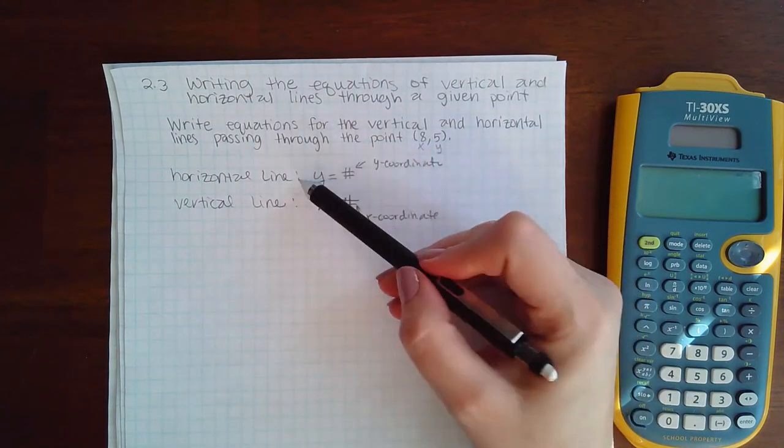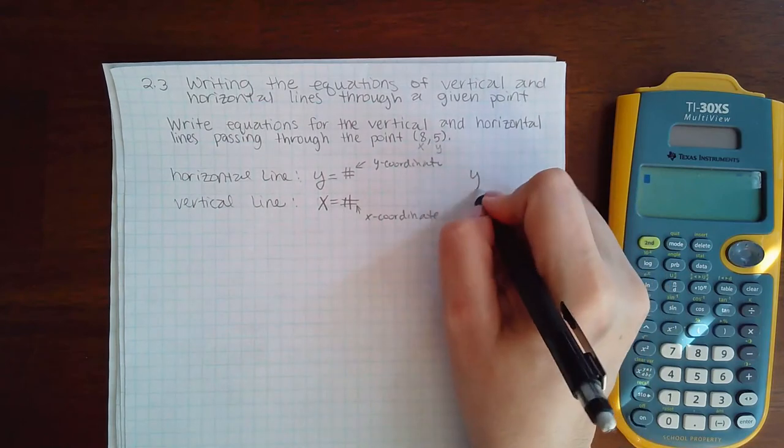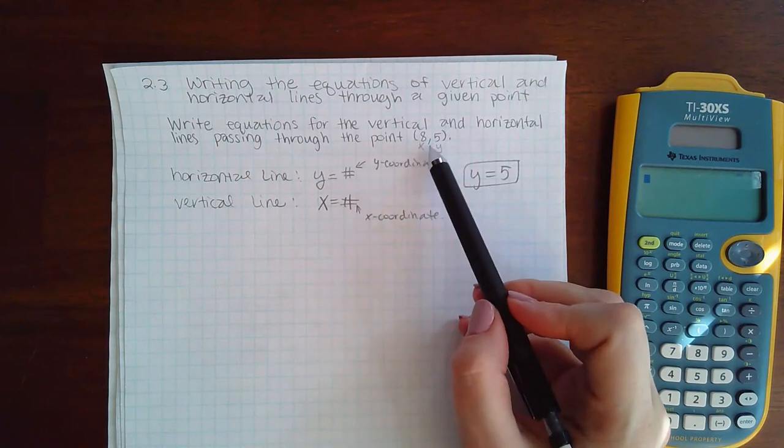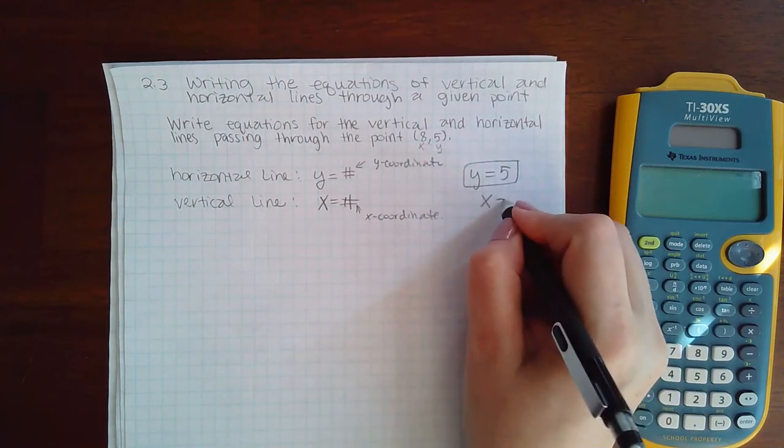So the equation of the horizontal line that goes through this specific point would be y equals 5. And the equation of the vertical line that goes through this specific point would be x equals 8.